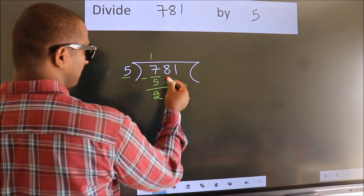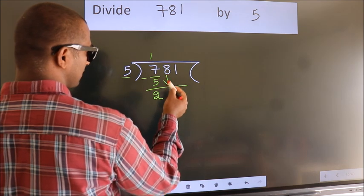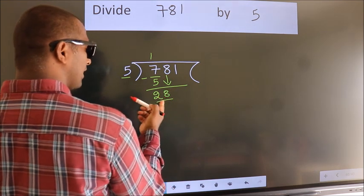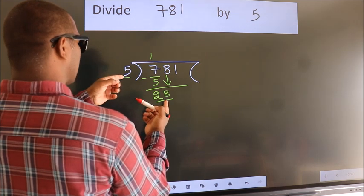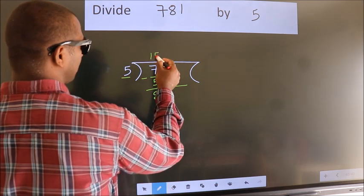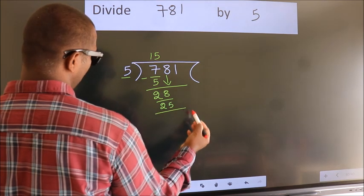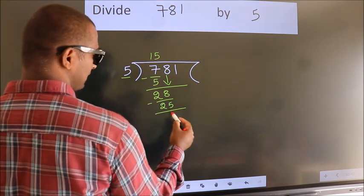After this, bring down the next number. So, 8 down, so 28. A number close to 28 in the 5 table is 5 fives, 25. Now we subtract. We get 3.